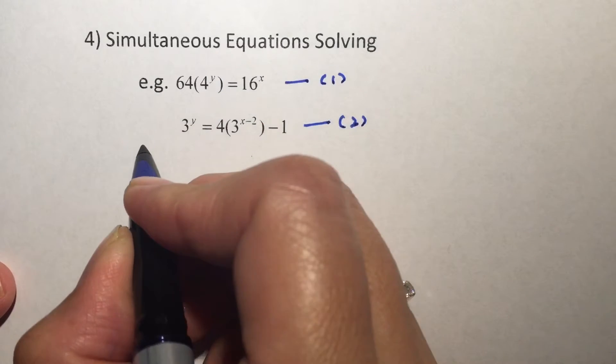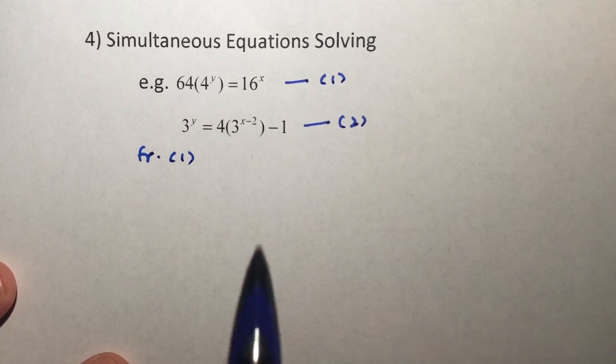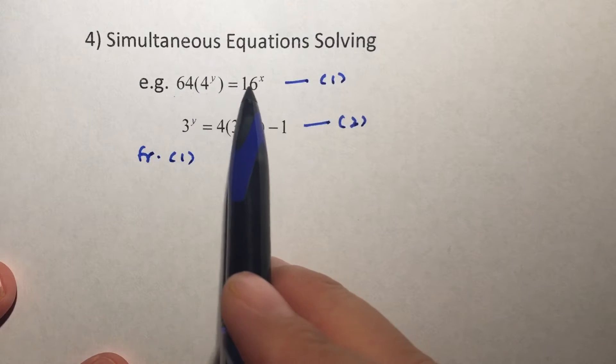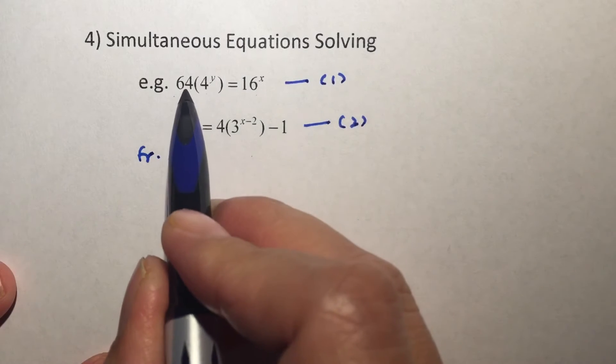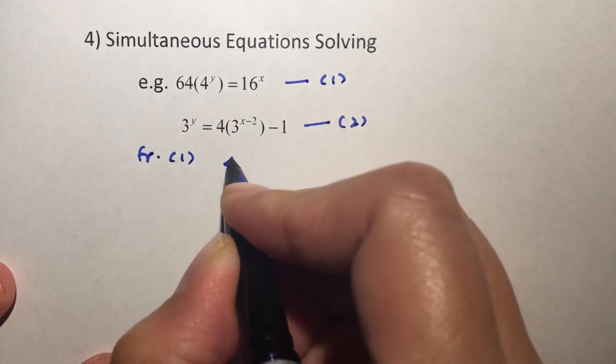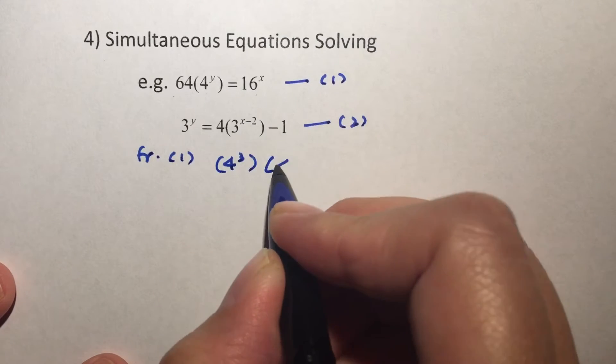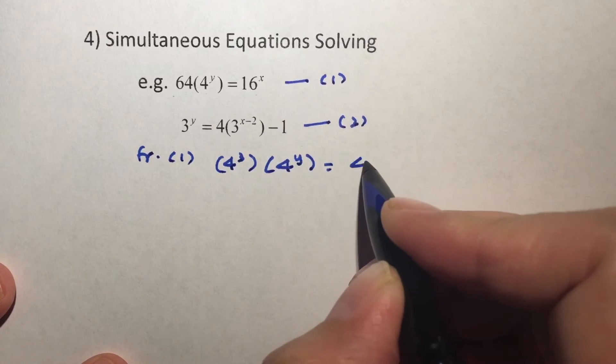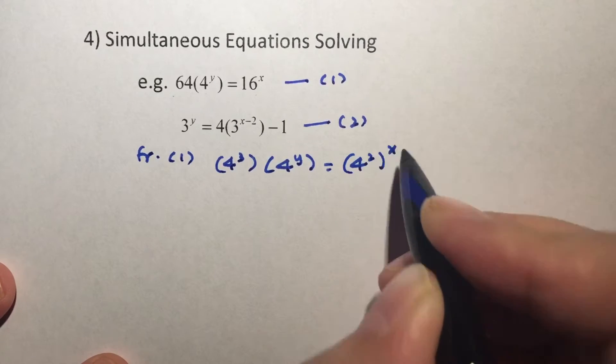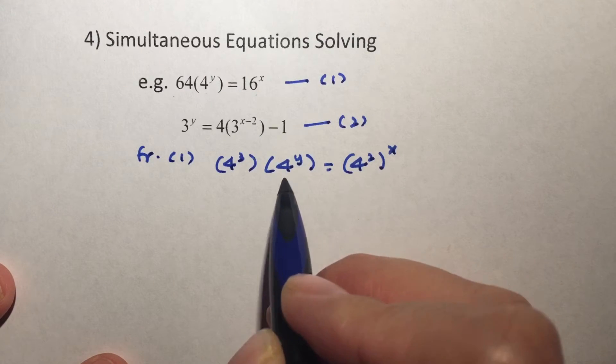Now let's start from equation 1. From equation 1, we'll notice that 64, 4 and 16 all share something in common which is the base 4. So 64 can be written as 4 cubed, 4 to the power of y I'll just leave it as 4 to the power of y, and 16 is actually the same as 4 squared. And what we'll notice is that all of them have the base 4.